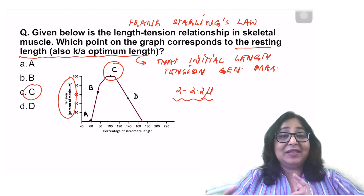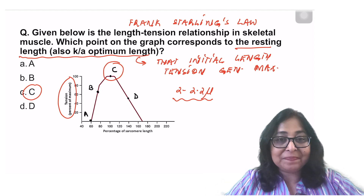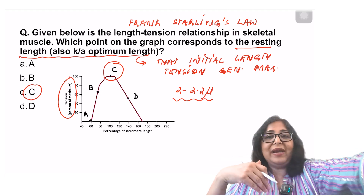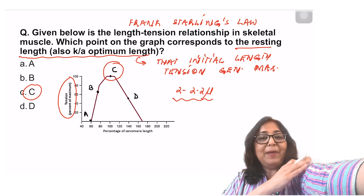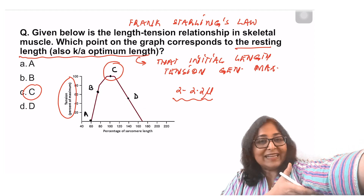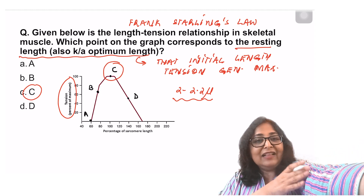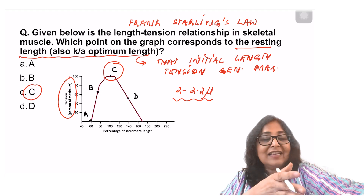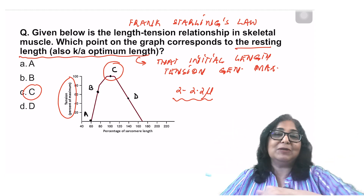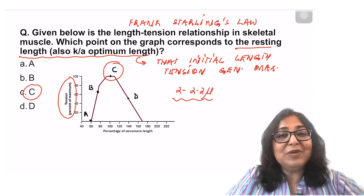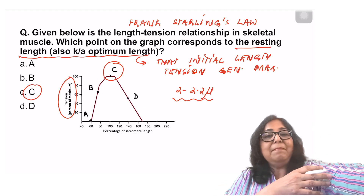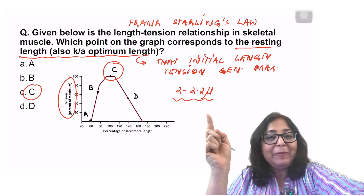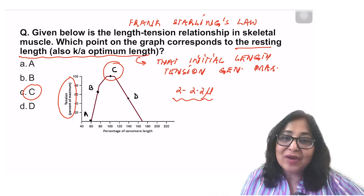Why is it known as a resting length? All our muscles at rest in our bodies — for example, when the elbow is extended, the biceps is at rest. The length of the muscle at rest is at or close to the optimum length. That is why optimum length is known as the resting length. If a muscle at rest contracts isometrically, the tension generated will be maximum.